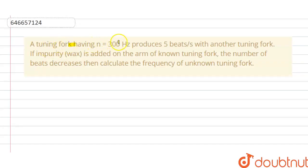A tuning fork having frequency ν = 300 Hz produces 5 beats per second with another tuning fork. If impurity wax is added on the arm of the unknown tuning fork, the number of beats decreases. Then calculate the frequency of the unknown tuning fork. So the solution of this question is